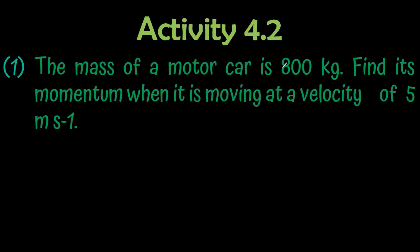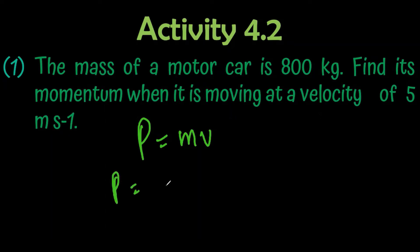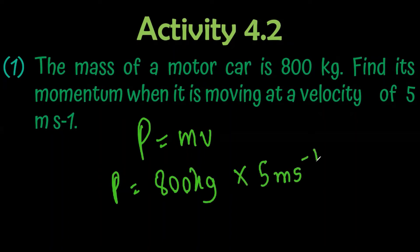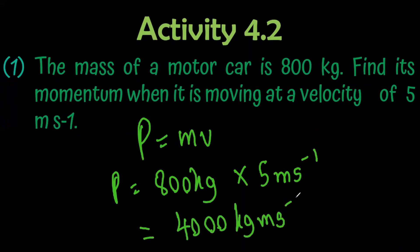The mass of a motor car is 800 kilograms moving at 5 meters per second. p equals momentum equals mass into velocity. Equal to 800 kilograms into 5 meters per second. So the final answer is 4000 kg·m·s⁻¹.